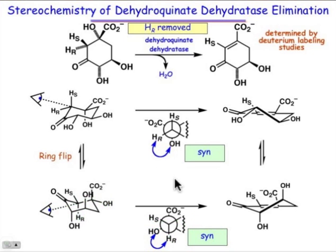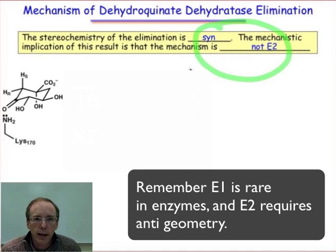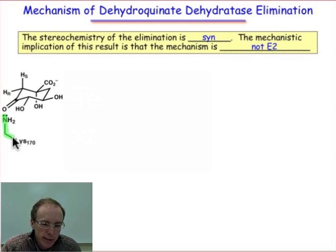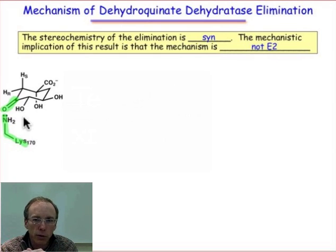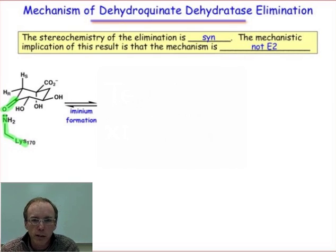So since it's a syn elimination, we can conclude that the mechanism is not E2, and we can guess that the mechanism might be an E1Cb mechanism, and that's basically what goes on. But in dehydroquinate dehydratase, there is a lysine present in the active site, and we can imagine that the combination of a carbonyl and a lysine is what we expect to produce, by covalent catalysis or nucleophilic catalysis, the iminium ion intermediate. And indeed, that's how this reaction proceeds. It's an E1Cb that involves the iminium ion formation.